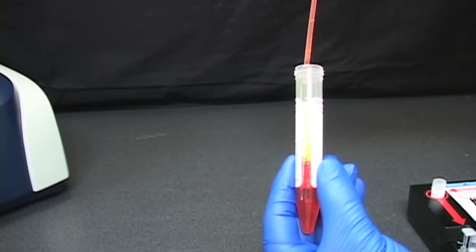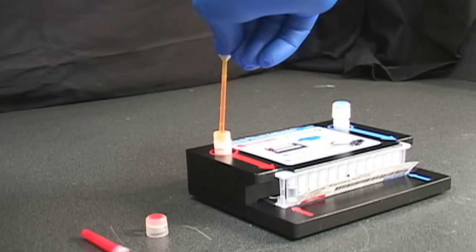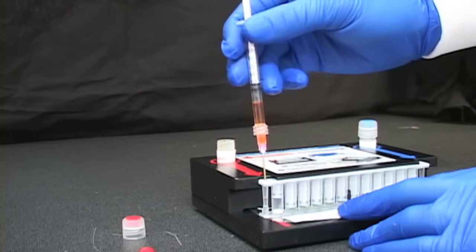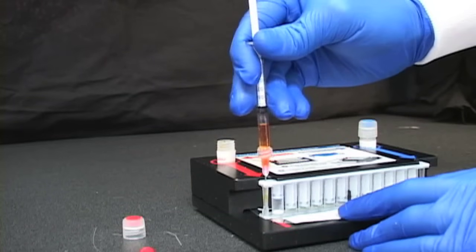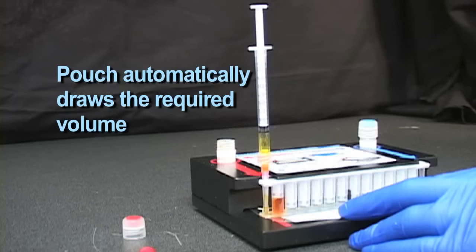Next, sample is added to the FilmArray sample buffer. This solution is then mixed and injected into the FilmArray pouch through the red inlet port located on the left side of the pouch. Again, the vacuum in the pouch automatically draws the required volume.